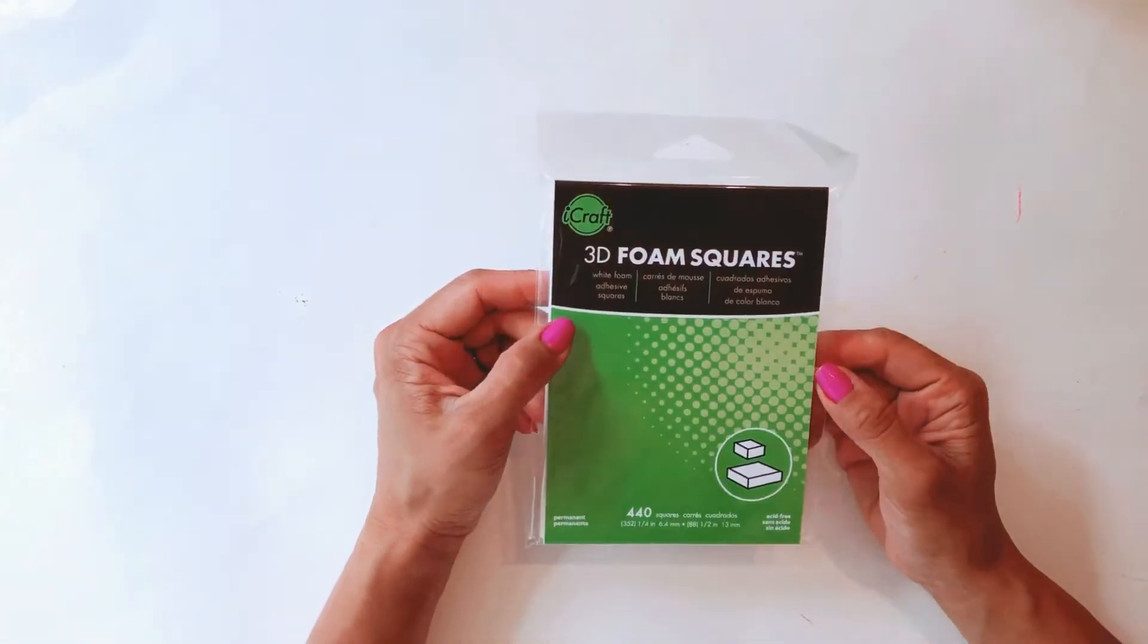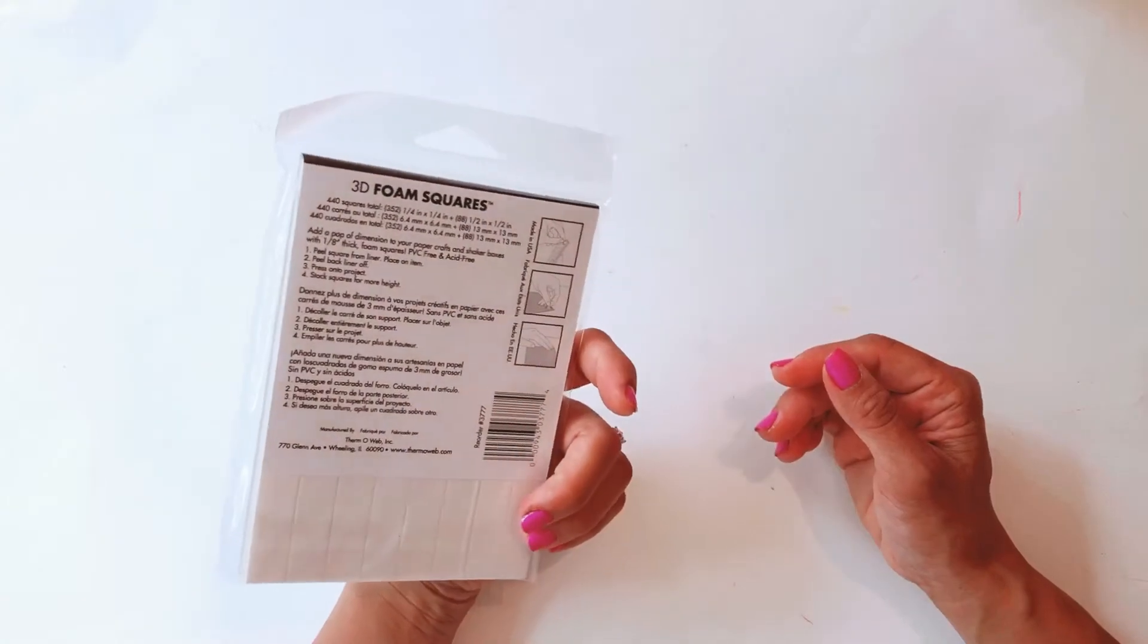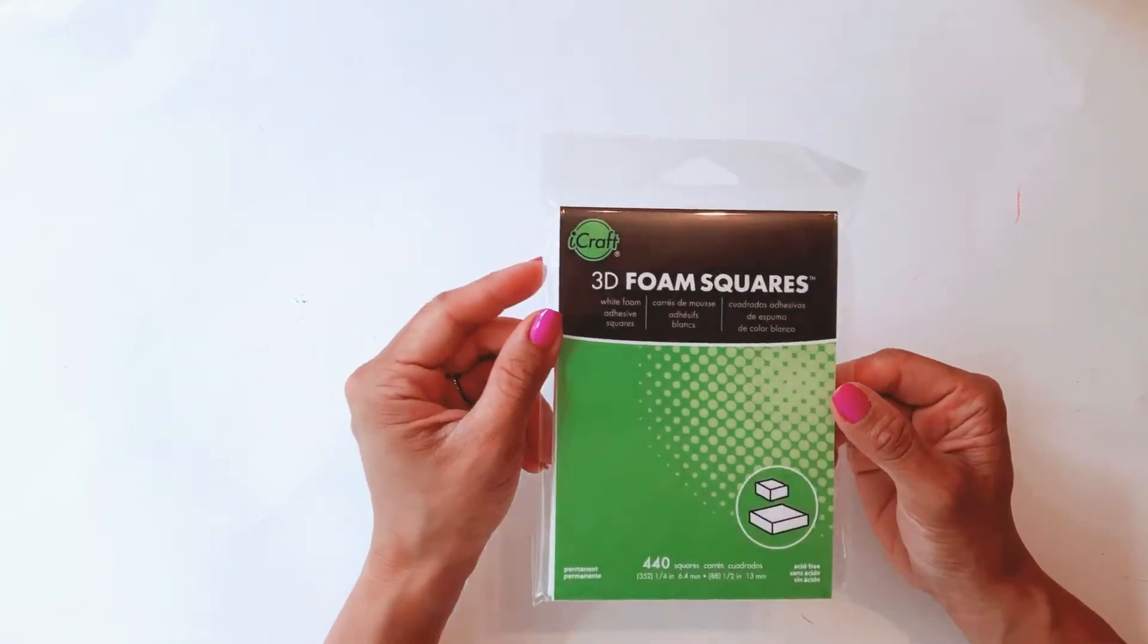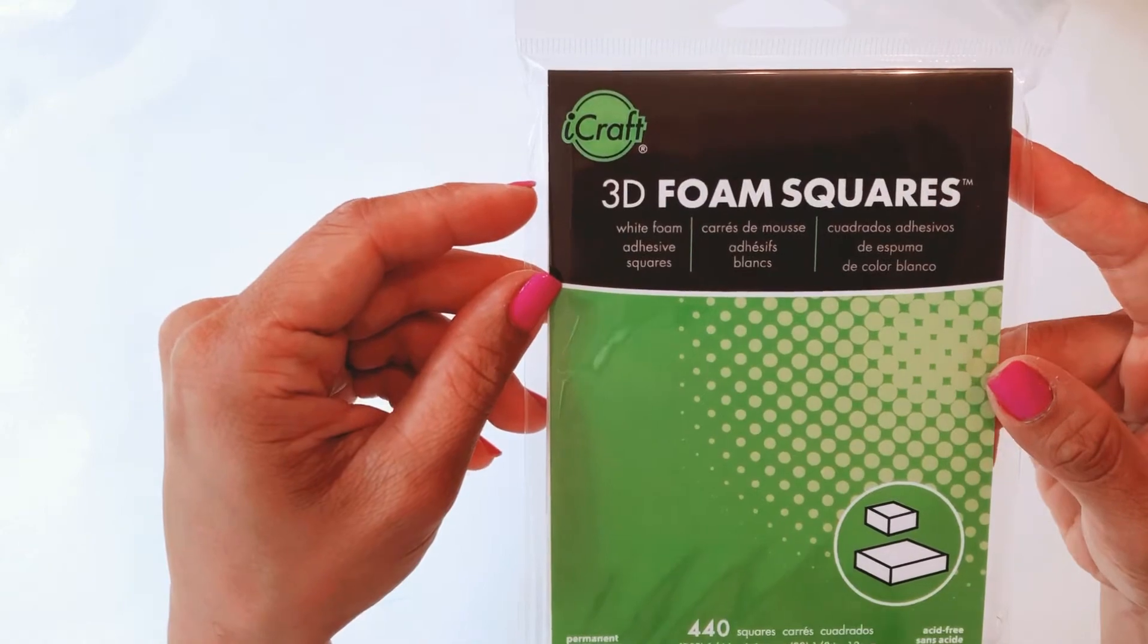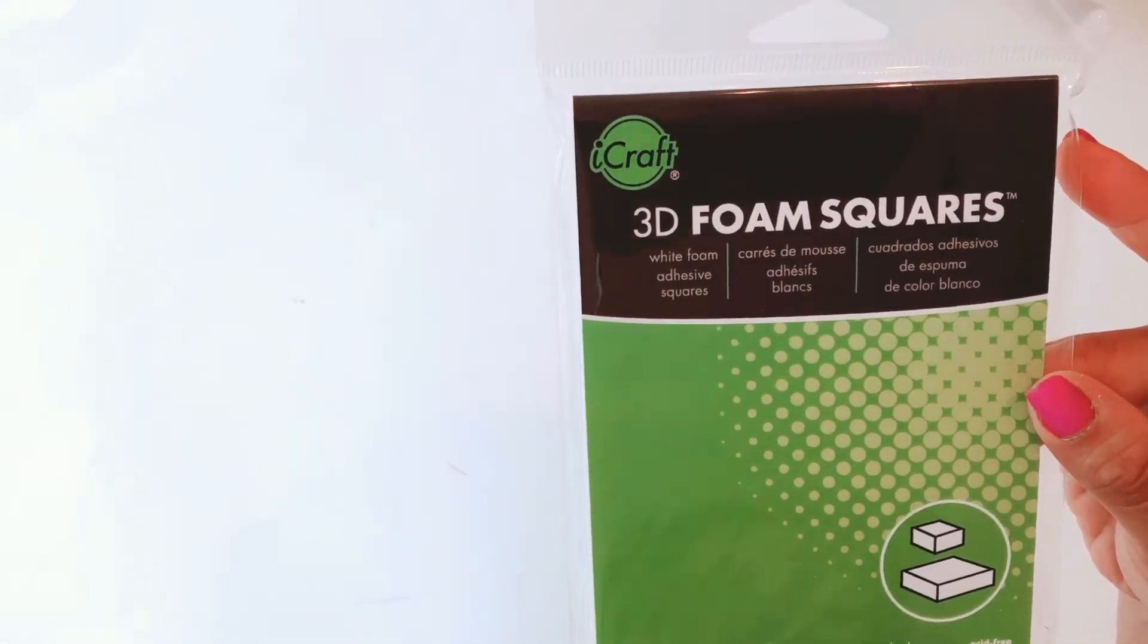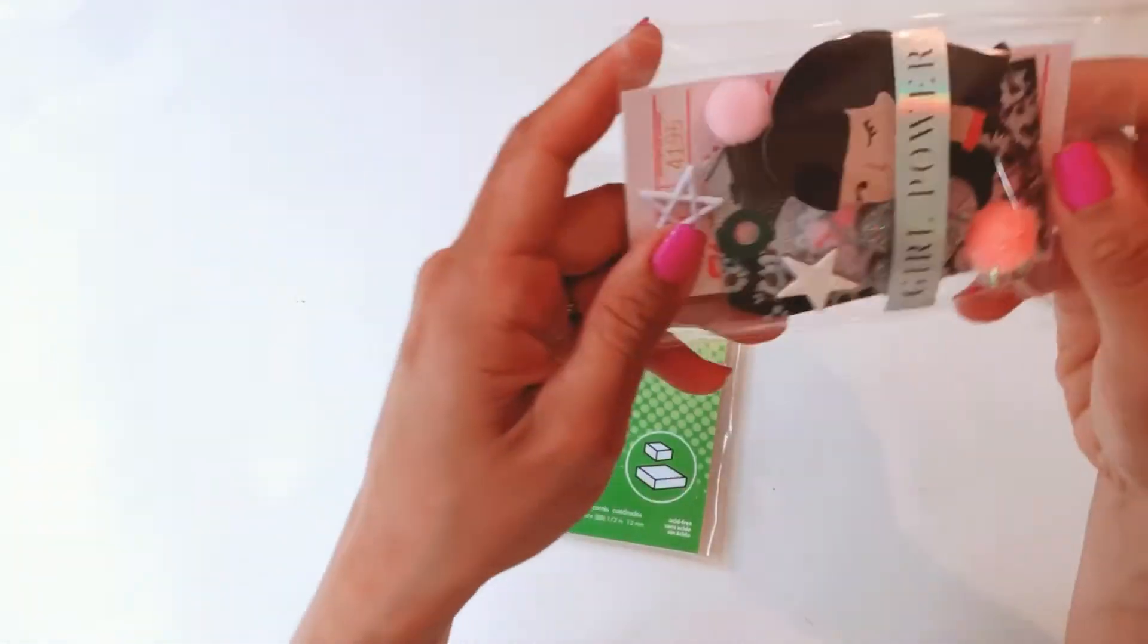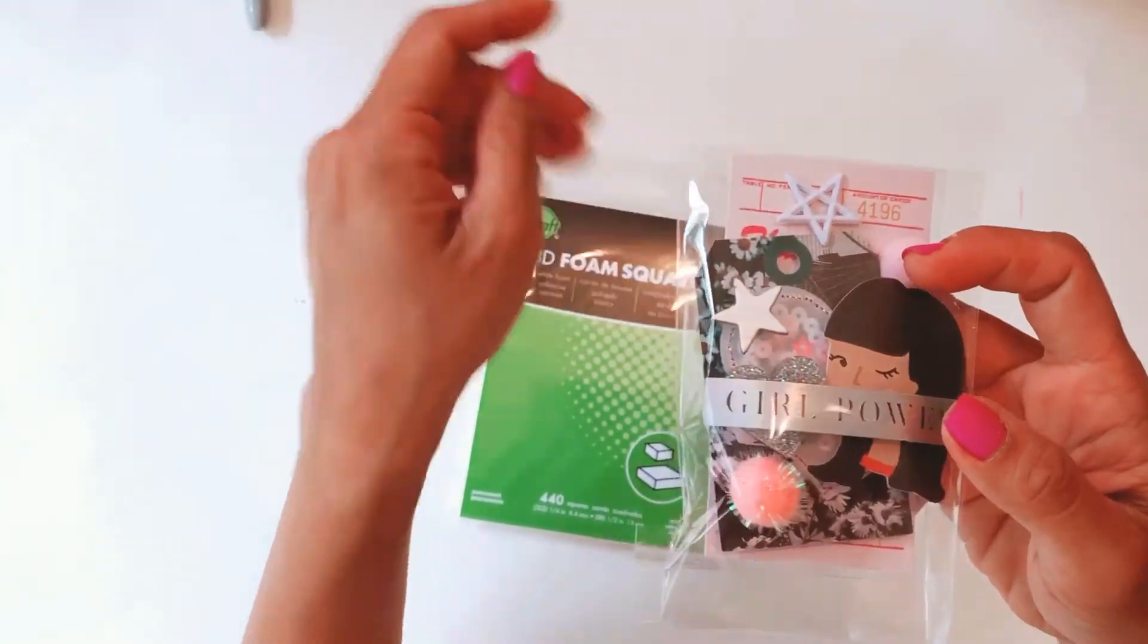The first thing I wanted to show you is these 3D foam squares. So I have gone through about three packets and I started using this around the end of December. The reason I really like these iCraft 3D foam squares is they're really, really thick. So I've been in the market for foam squares that are 12 mil or thicker, and these ones being 13 mil are just really perfect for me.